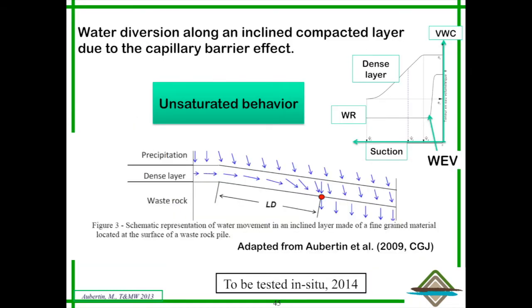The concept has been further investigated in recent years because of this capillary barrier effect. If you have water infiltrating in your dense layer, it will tend to follow this layer and the interface with the coarser material below. This will move down until you reach the diversion length, which is related to the water retention curve of both materials. The diversion length is related more specifically to the water entry value of the coarse material at the base.